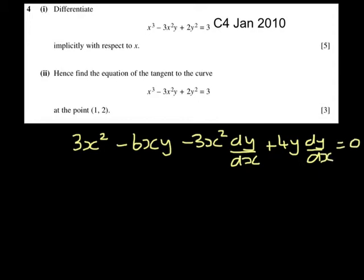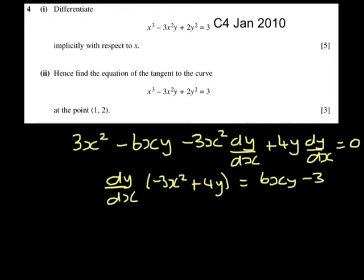Gathering together like terms, on the left I'm going to have dy dx upon minus 3x squared plus 4y, and on the right 6xy minus 3x squared.